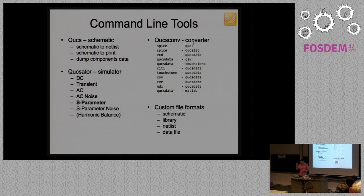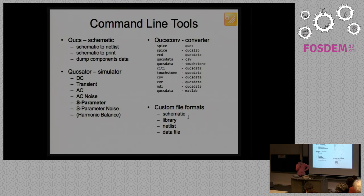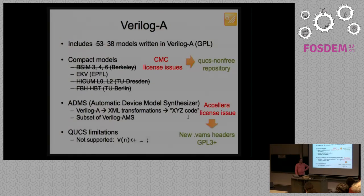And, the QucsConv is a tool that converts between a few formats. That I used to visualize or to convert netlists and library components. And, this is a bit of the problem that we might talk later on the panel. That we have custom file formats for the schematic, which is the same for the library. And, also the netlist and the data files that are plain text files that are also custom. So, we might work on that too. Collaboration, it's a bit difficult. It makes more difficult because of that.